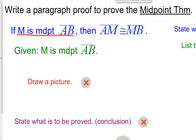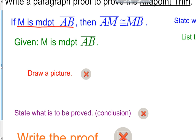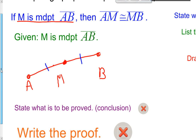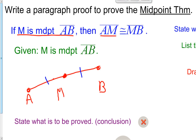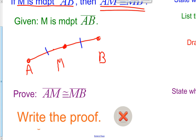Next, step three, we draw a picture and mark it up. We draw segment AB and put M in the middle as the midpoint, then mark that AM is congruent to MB. Step four is writing the conclusion, which is the 'then' part of the conditional statement: AM is congruent to MB.